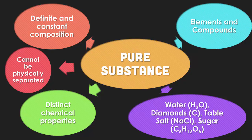A pure substance is something that has a definite and constant composition, which means it does not fluctuate in time. Like water is always H2O — it's never HO or H3O. A pure substance also cannot be physically separated; it requires some sort of energy through a chemical reaction to separate. All pure substances have a distinct chemical property. Water is a clear liquid, diamonds are the strongest thing known to man, table salt is tasty on food, and sugar is sweet. Pure substances are composed of elements and compounds.